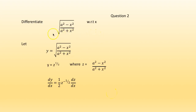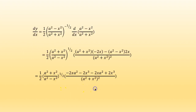Next question: differentiate √((a²−x²)/(a²+x²)) with respect to x. Let y = √((a²−x²)/(a²+x²)). We write y = z^(1/2) where z = (a²−x²)/(a²+x²). So dy/dz = (1/2)z^(−1/2) · dz/dx, that is (1/2)·((a²−x²)/(a²+x²))^(−1/2) · d/dx of z.